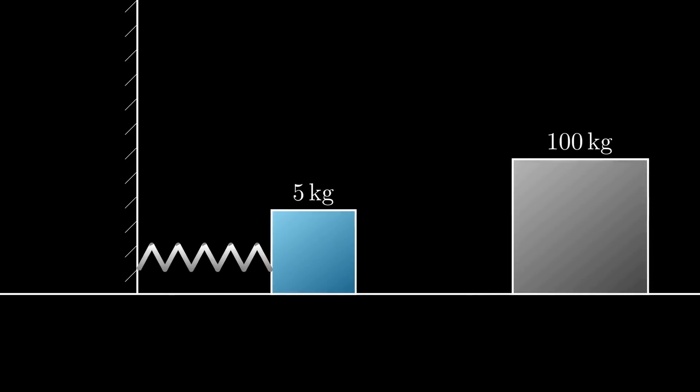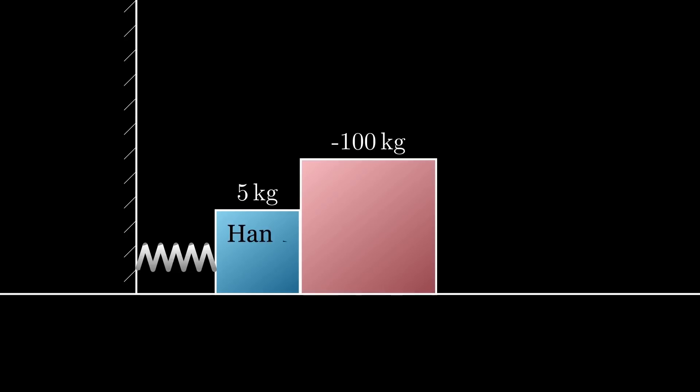The original question was how you can push on a negative mass and not have it go backwards through your hand. Well, here you can take the positive block as your hand, and the spring as your arm extending to give a push. This way we can have the spring push on a positive mass, so we have a better idea of how it operates.